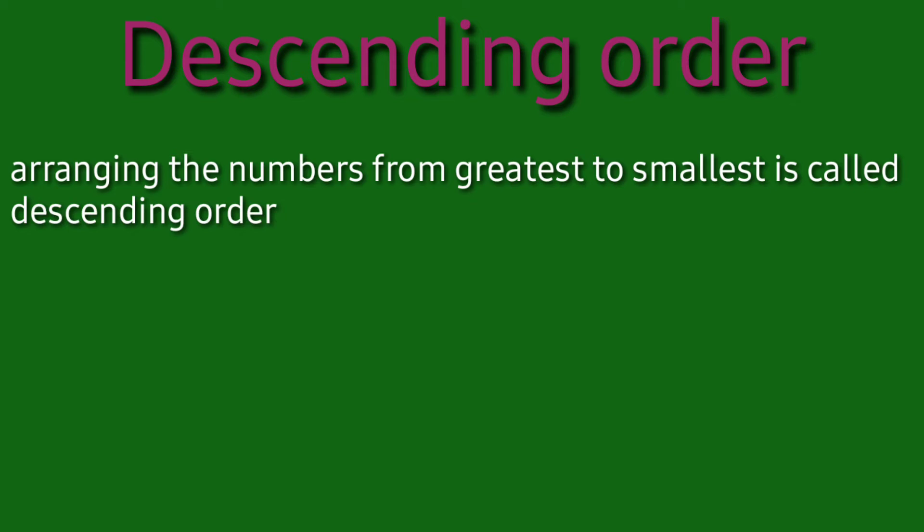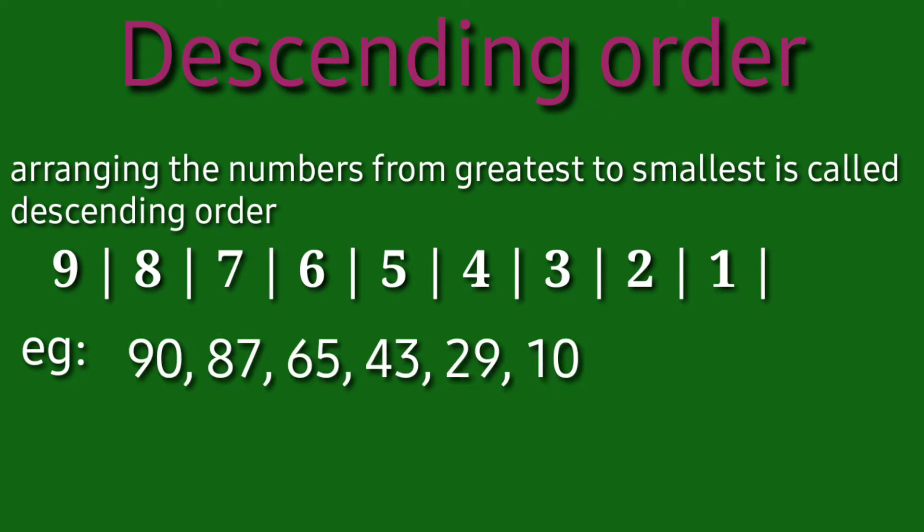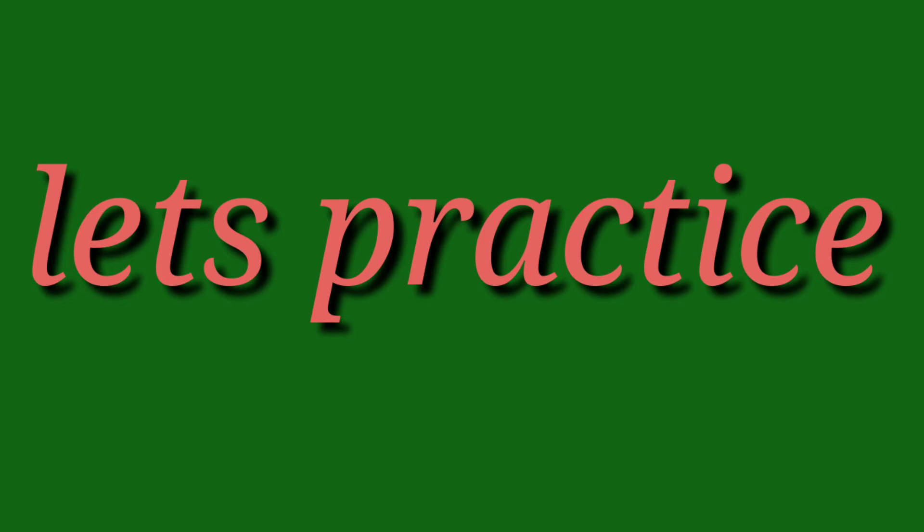Coming to the descending order, arranging the numbers from greatest to the smallest is called descending order. Here are the numbers from 9 to 1 arranged in the descending order. Examples are given here. Let's practice.